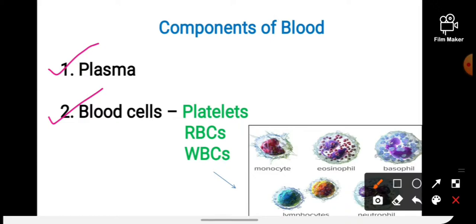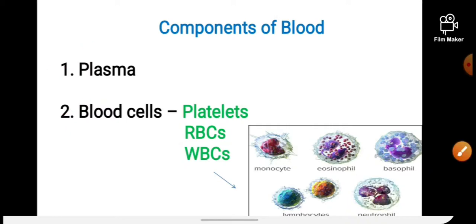Blood cells are of three types: platelets, RBCs, and WBCs. WBCs are of five types. We have seen this information in the last video.